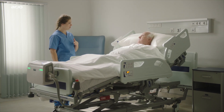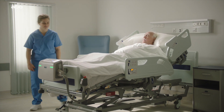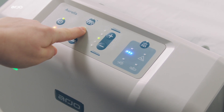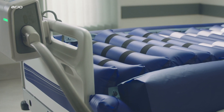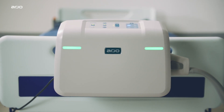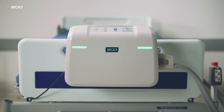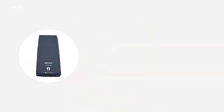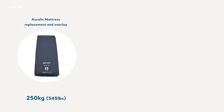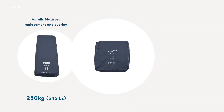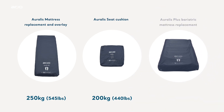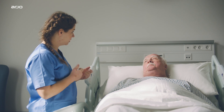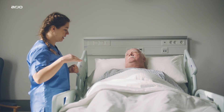The purpose of this video is to highlight the main features and design of the Oralis, an intelligent dual therapy pressure redistribution system. The complete Oralis range includes a mattress replacement, mattress overlay, seat cushion, and bariatric mattress replacement, all of which can be operated from the Oralis pump. Designed especially for high risk and vulnerable patients, the Oralis mattress replacement and overlays can be used for patients weighing up to 250 kilograms or 545 pounds, the Oralis seat cushion 200 kilograms or 440 pounds, and Oralis Plus bariatric mattress replacement 454 kilograms or 1,000 pounds. Full information on patient assessment criteria is provided within the Oralis instructions for use.